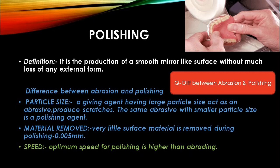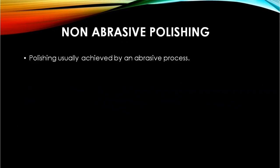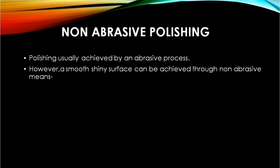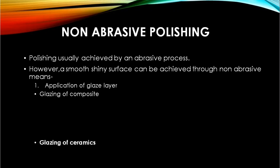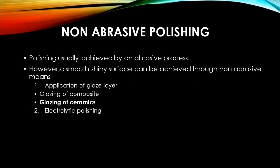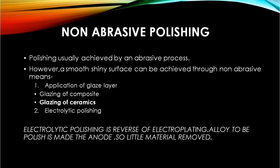Stone burs can be used for polishing at high speed by applying light pressure. Polishing is usually achieved by an abrasive process, but a shiny surface can also be achieved through non-abrasive means such as application of a glaze layer. In the case of composites and ceramics, electrolytic polishing can be done, which is the reverse of electroplating — the alloy to be polished is made the anode and little material is removed. Burnishing is used in the case of polishing amalgam restorations.